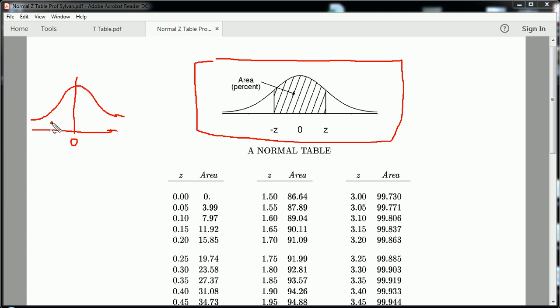Again, we know that 50% of Z values are less than 0, and 50% are greater. So basically, it's symmetric about the mean, which is 0.